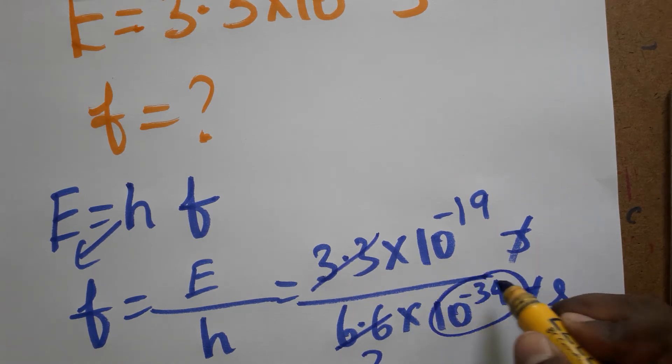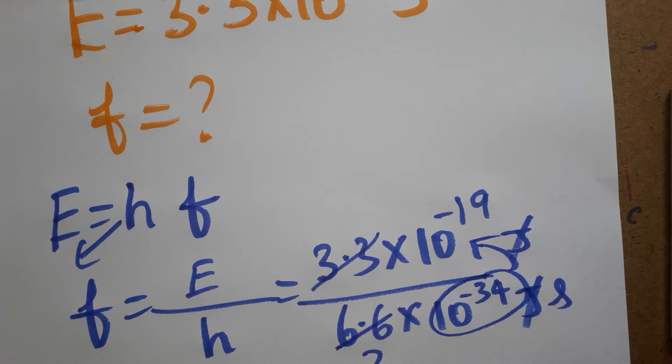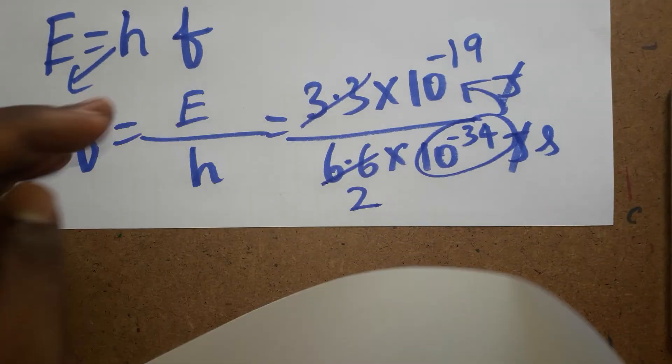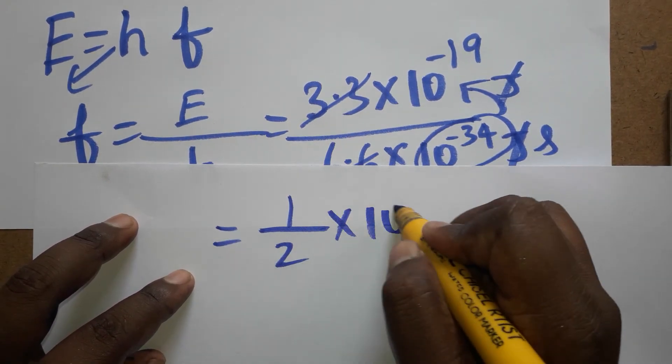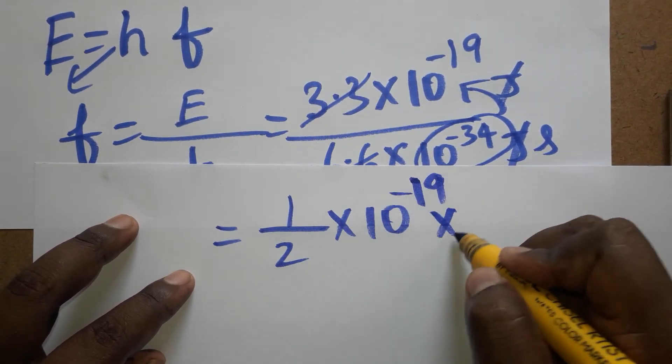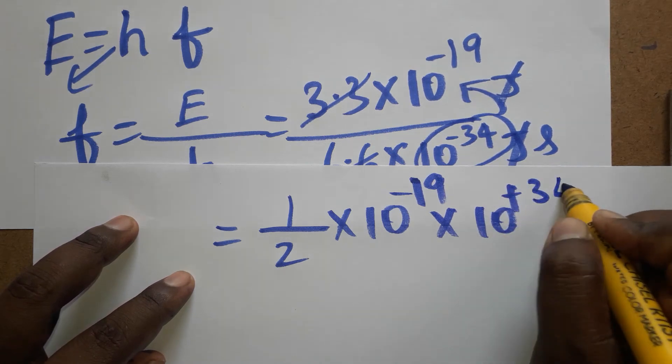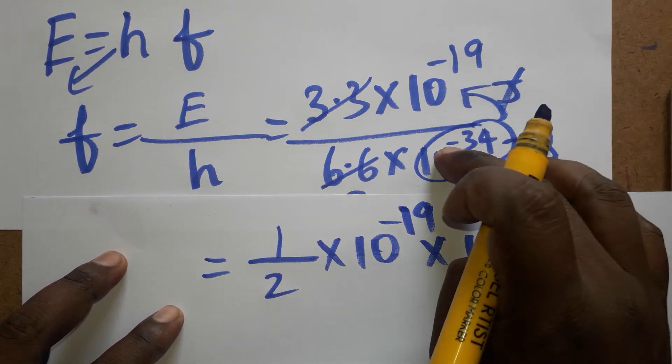From denominator I am taking as a numerator, 10^-34 is going to become as 10^+34. So the answer will be 1 divided by 2 × 10^-19 × 10^+34. From denominator if you are taken as a numerator, minus 34 is going to become plus 34.